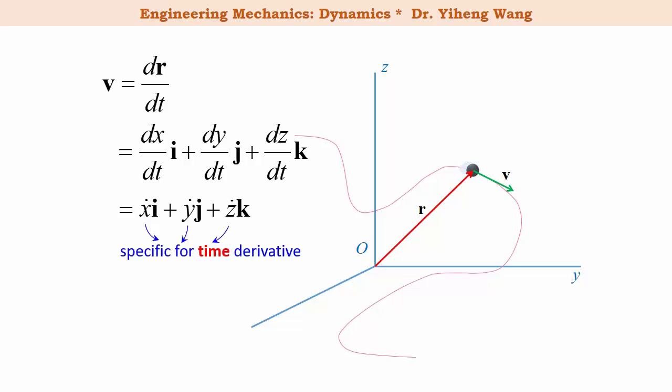We can write the velocity vector in velocity components, where vx, vy, and vz represent the velocity of the particle in the x, y, and z directions respectively. And once again, the velocity vector is always tangent to the path at any point.